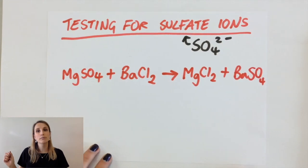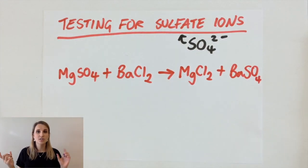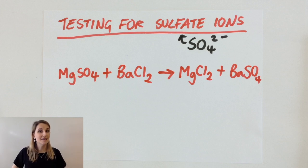When it reacts with the barium chloride, what you get is a double substitution happening, and this results in you making magnesium chloride and barium sulfate.